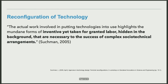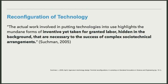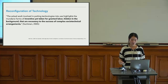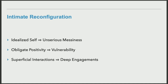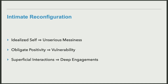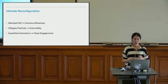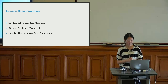We're looking at the problem through the view of reconfiguration of technology. Following feminist researchers such as Suchman, we draw attention to the inventive yet taken-for-granted labor hidden in the background that is necessary to the success of complex socio-technical arrangements. We find that users have reconfigured Instagram in three ways: from idealized self-presentation to unserious messiness, from obligated positivity to vulnerability, and from superficial interactions to deep engagement.